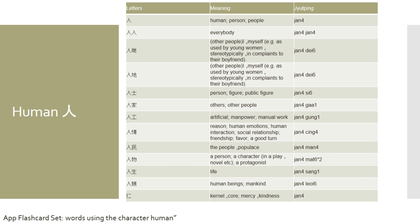If you want to say 'manpower' or 'manual work' in Cantonese, you would say 人工. This also means 'artificial.' Another entirely different meaning is 'salary' — so salary can also be said as 人工. If you want to say 'human emotions' or 'a favor' in Cantonese, you would say 人情. If you want to say 'the people' in Cantonese, you would say 人民. And if you want to say 'a protagonist,' 'a character,' or 'a person' in Cantonese, you can say 人物.